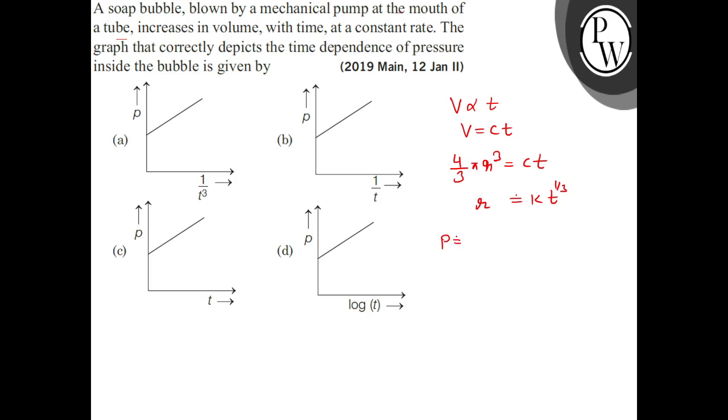If we talk about pressure, the soap bubble is going through the pump from mechanical pump. So here I can write the pressure equation. P0 is atmospheric pressure. Excess pressure will be 4T upon R. Total pressure will be P0 plus 4T upon R, and R will be k into t raised to 1 by 3.